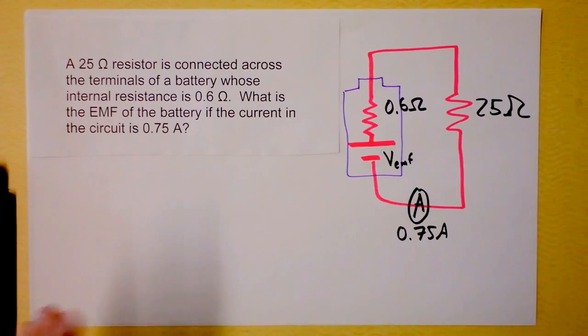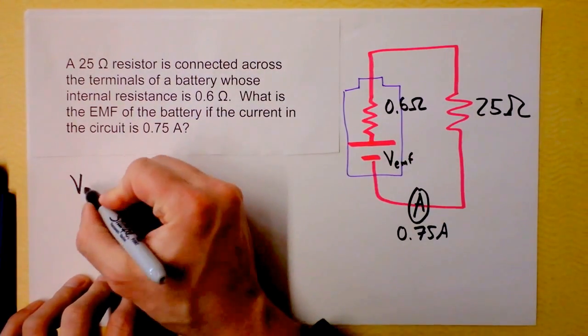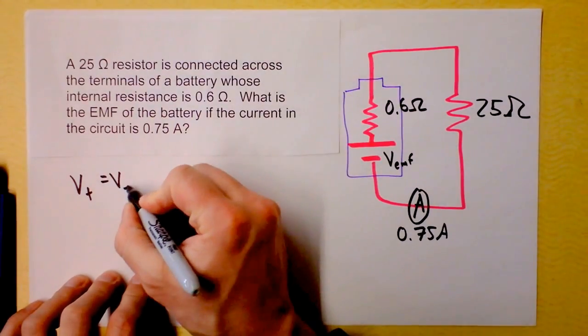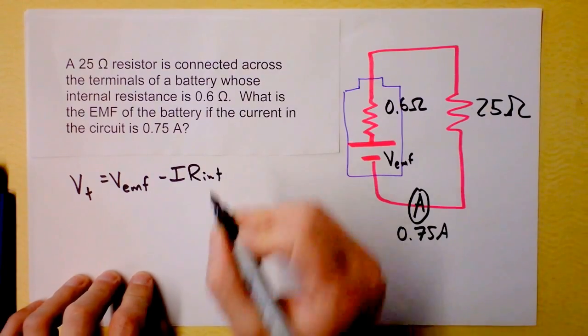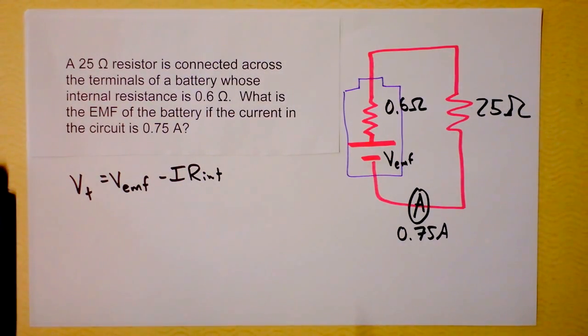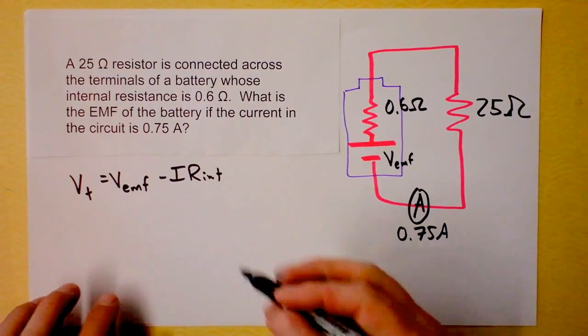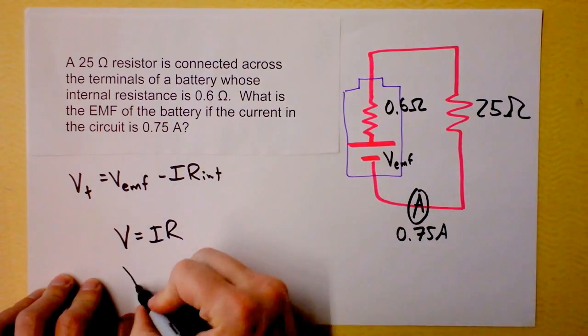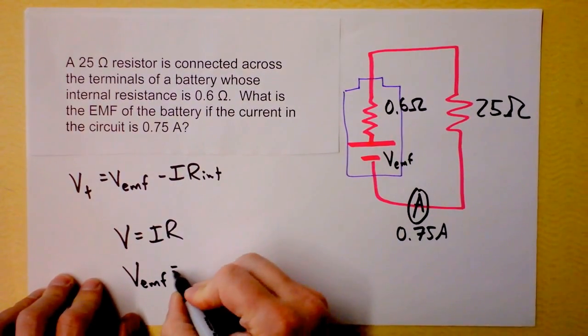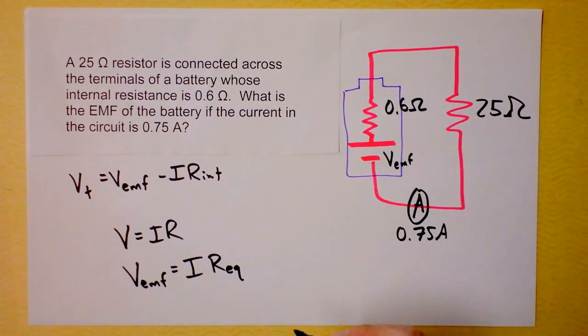And holy cow, it's a very easy problem because we don't even need to use that stupid equation that we were talking about. The terminal voltage equals the EMF minus the current times the internal resistance. I mean, I guess you could do that, but they don't give you the terminal voltage, so I don't really see why that's going to be helpful. What if I just say V is IR, and then I say that the EMF voltage is going to be the current times the equivalent resistance, that is the resistance of the entire thing.